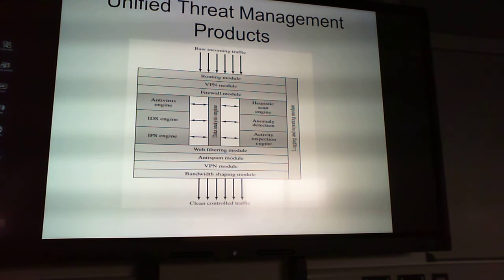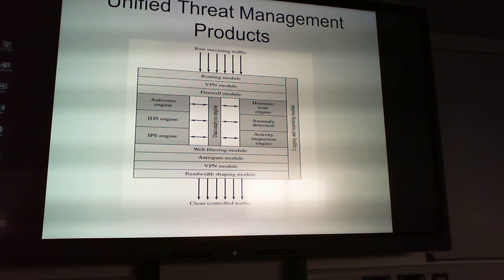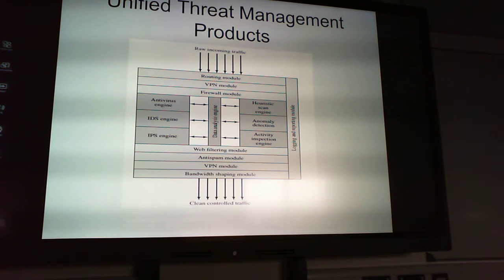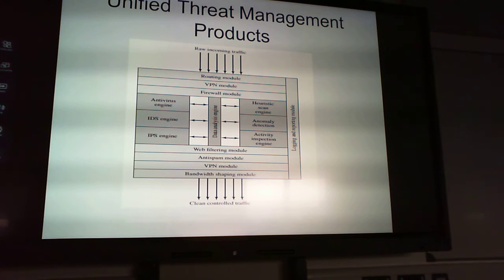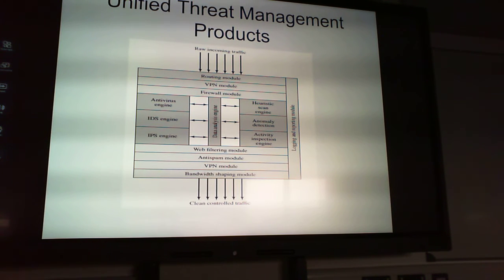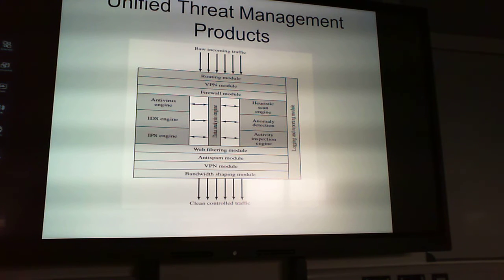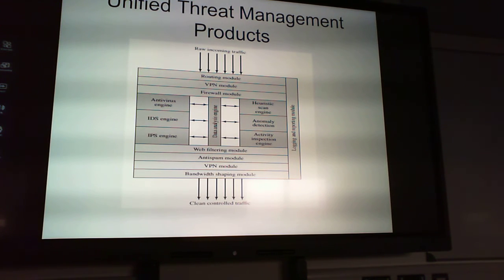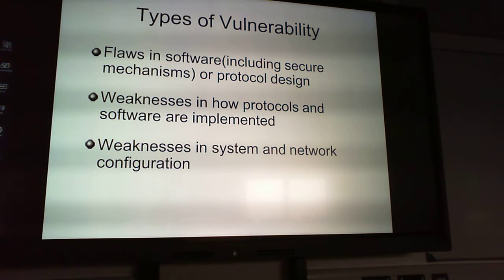A unified threat management product shows raw incoming traffic going through a routing module, VPN module, and firewall module, then into a data analysis engine running antivirus, heuristics to check for anomalies, an IDS system, the IPS engine, an activity inspection engine for application-layer activity, a web filtering module, an anti-spam module, VPN module again, and a bandwidth shaping module — producing clean, controlled traffic. It's quite a comprehensive way to filter your traffic.